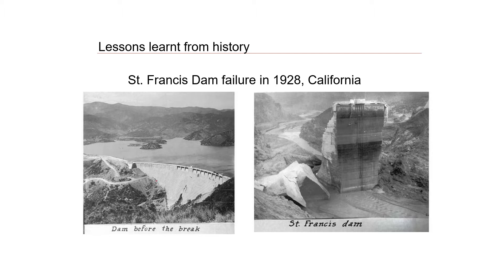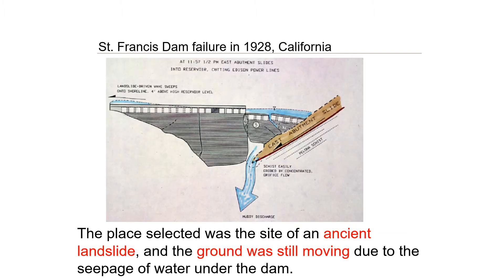This is the dam that was designed and built to hold water. Three weeks after the dam was completed there was a huge failure — the dam collapsed, and this is the picture of the dam after it collapsed. After the failure they did a very thorough site investigation to find out the reason, and apparently part of this dam was built on an ancient landslide.